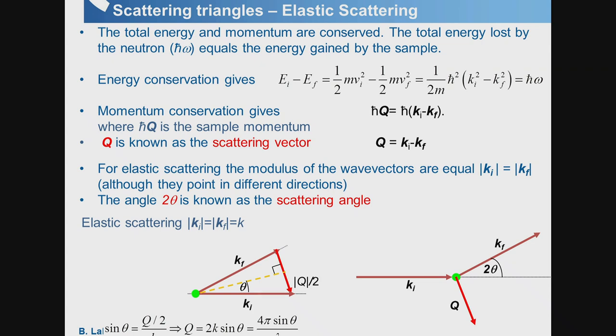We could rearrange the scattering triangle as ki, kf scattering from the sample at angle 2θ, with wave vector difference Q. In the experiment, we must arrange whatever direction is interesting along Q, which can be varied by changing 2θ. For a reciprocal lattice point to land along Q, you rotate the sample until that orientation is achieved, and you'll see a Bragg peak in your detector placed at angle 2θ.